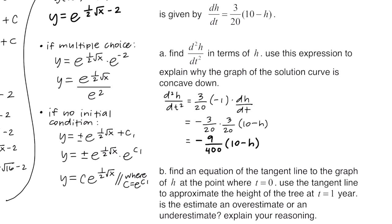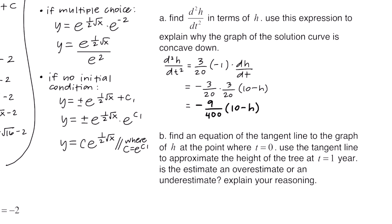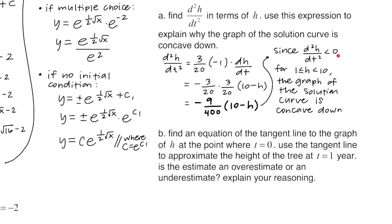The second derivative is -(9/400)(10 − h)². Since the tree height ranges from 1 to 10 feet, the factor (10 − h) is positive, so (10 − h)² is positive, and multiplied by -9/400 gives a negative result. Since the second derivative is negative on the interval from 1 to 10, the graph of the solution curve is concave down. Any time the second derivative is negative, it indicates the graph is concave down.